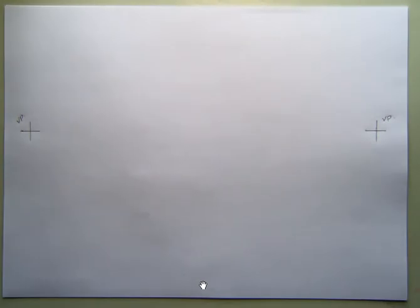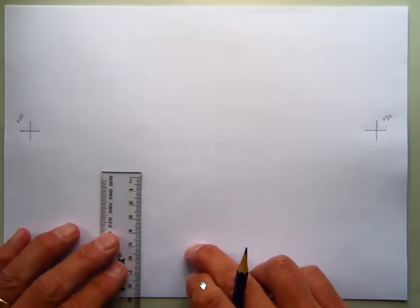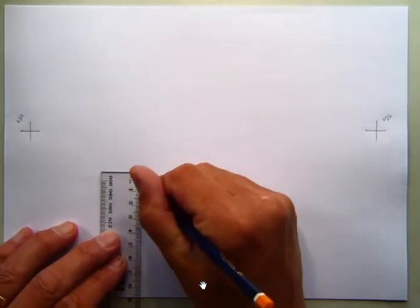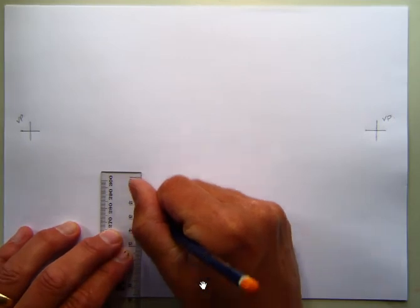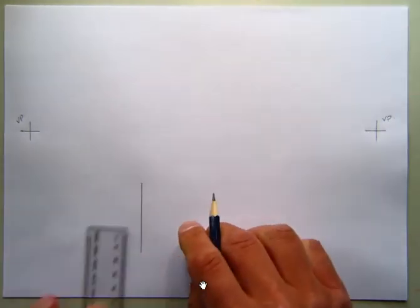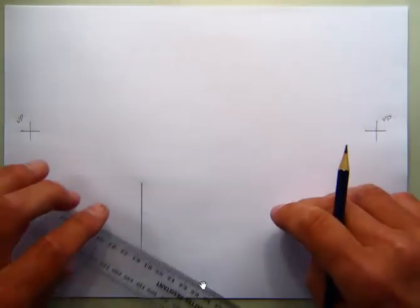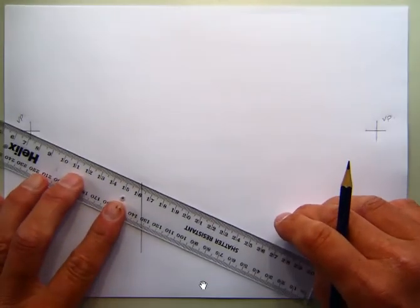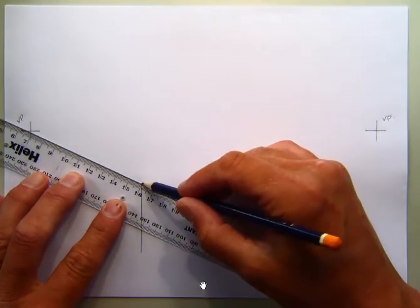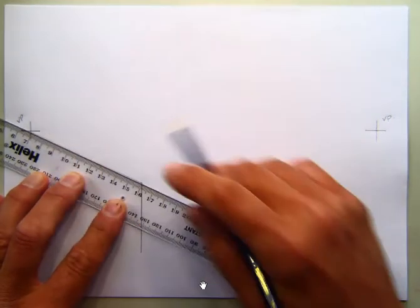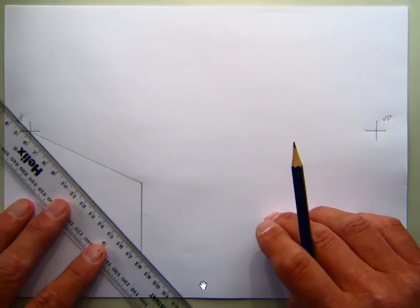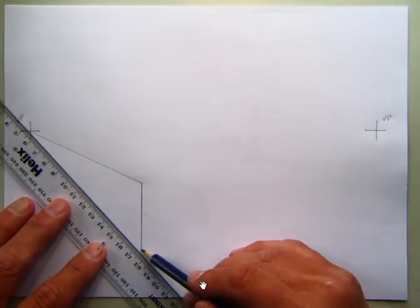So when we're drawing a cube in two point perspective we always start with a vertical line. So I'm just using my ruler here and I'm going to draw a vertical line here. So what I'm now going to do is I'm going to try and draw a line from the top of that line to the vanishing point. I just keep that quite light to begin with and the same from the bottom of the line to the vanishing point.